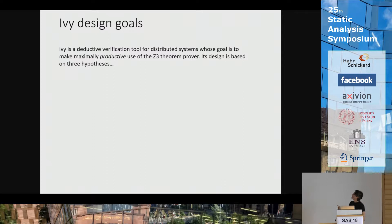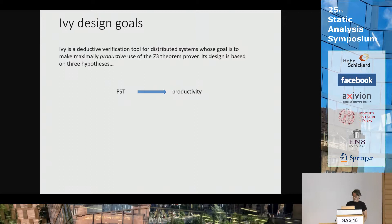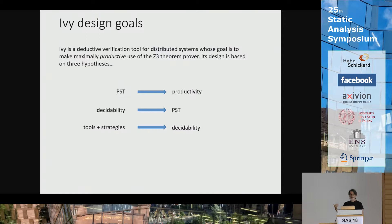Ivy is designed as a deductive verification tool to make maximal use of the power of the Z3 theorem prover in concert with a human user, based on the following hypotheses. First, that PST properties — predictability, stability, transparency — will lead to greater productivity of the human engineer in doing a large proof. Second, that the way to get Z3 to have these properties is to use it in a domain where it is a decision procedure. Third, that there are reasonable tools and strategies to reduce proof goals to lemmas in that decidable realm. Ivy is supposed to give you those tools and strategies.